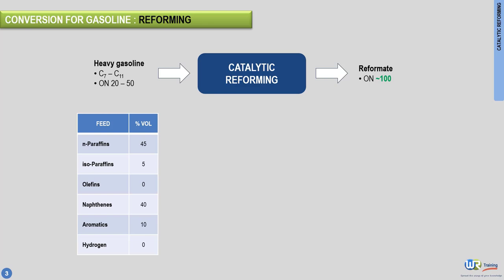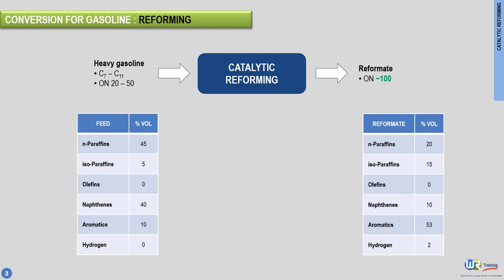The catalytic reforming process chemically reshapes the composition of the feed. A typical composition of the reformate is shown now on screen. Reformates are rich in aromatics and isoparaffins. These hydrocarbon molecules have good octane numbers.